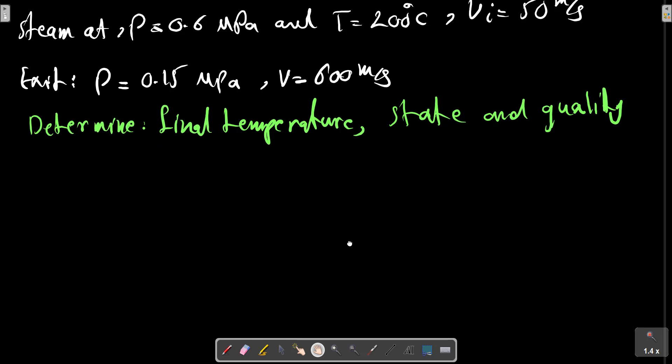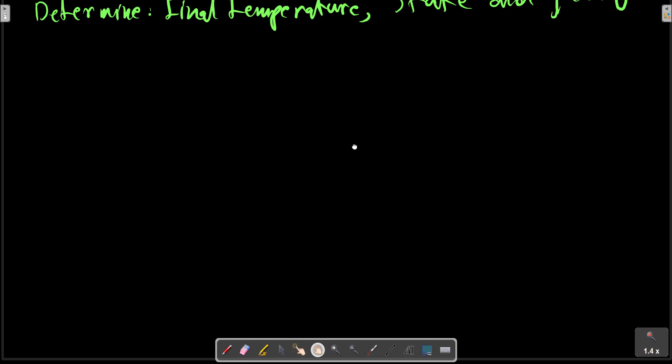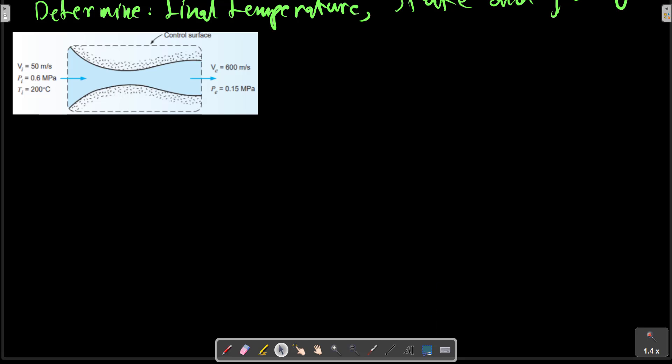For a nozzle, we can sketch this picture. Consider this picture for a nozzle. So at first we should write the first law for steady state nozzle. We have this relation for the steady state nozzle.